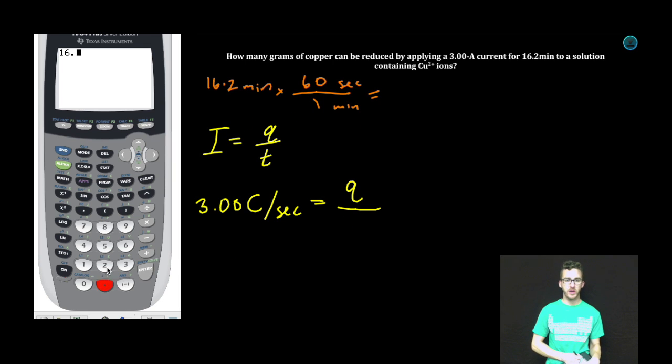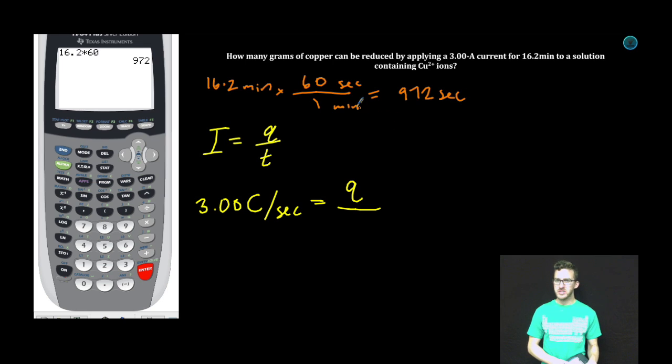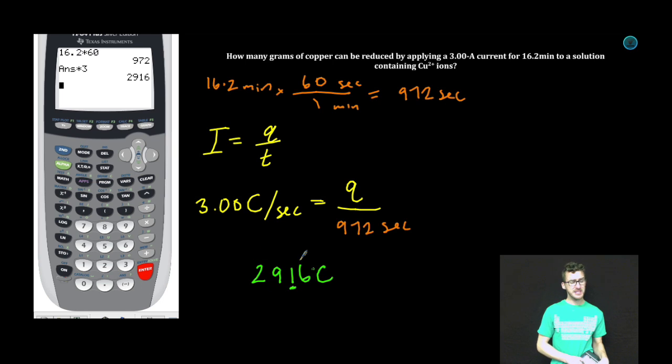Jump to my calculator. 16.2 times 60 equals 972 seconds. I'm going to just slip that down here into my I equals Q over T equation. And then to solve for Q, I'm just going to multiply these two values. We get 2,916 coulombs of charge. But I remind myself of sig figs here and I'm feeling really great. But what does this tell me?